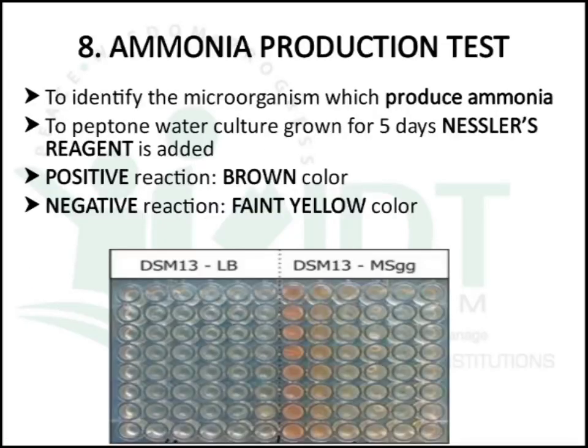The next test is the ammonia production test, used to identify microorganisms that produce ammonia. To the peptone water culture grown for 5 days, Nessler's reagent is added. A positive reaction produces brown color, and a negative reaction produces faint yellow color.